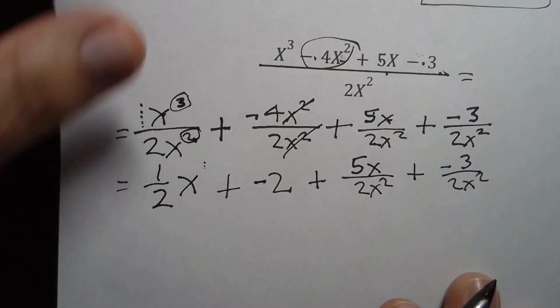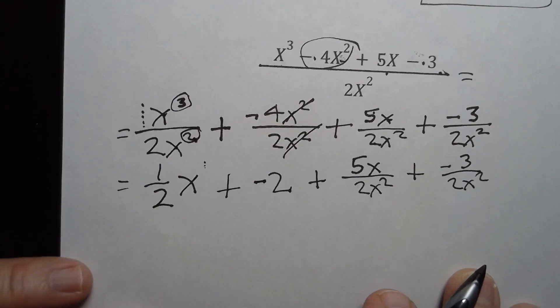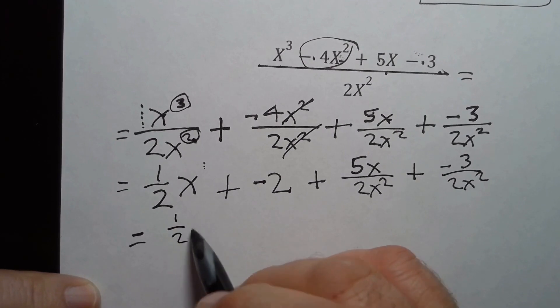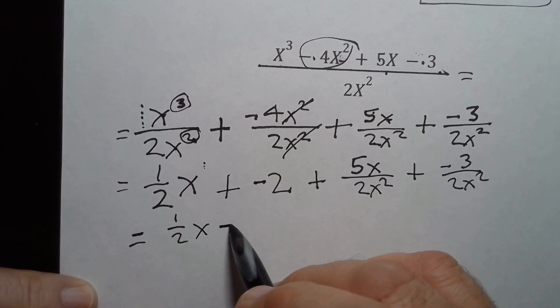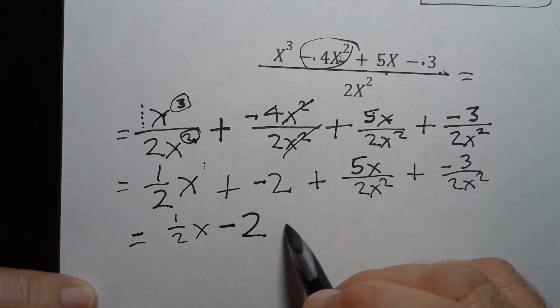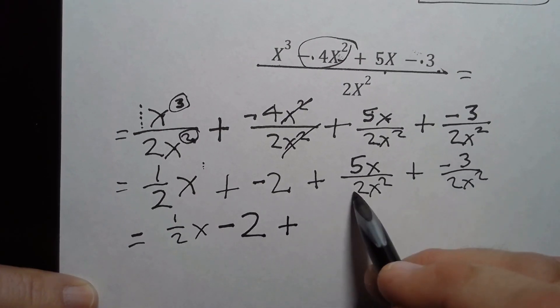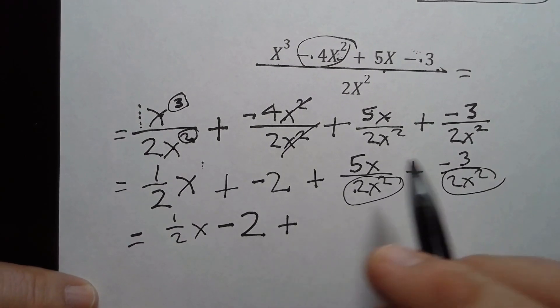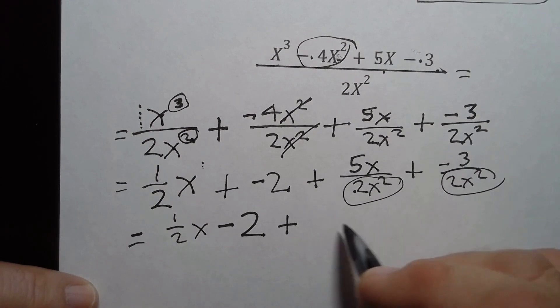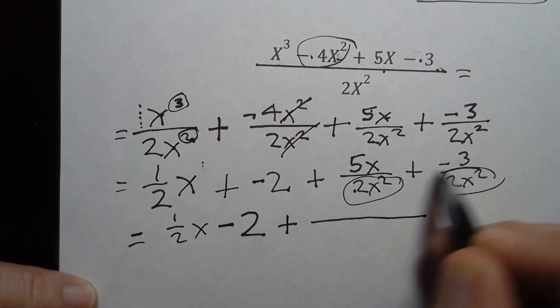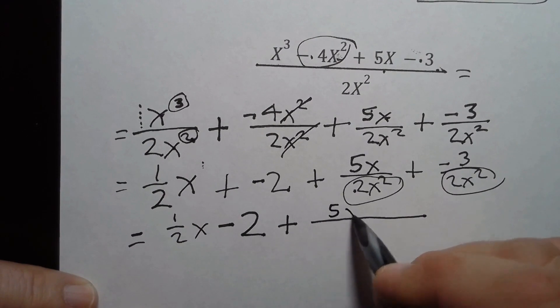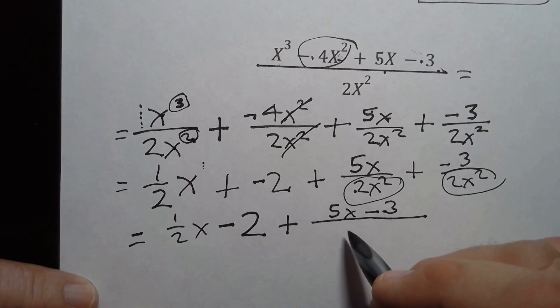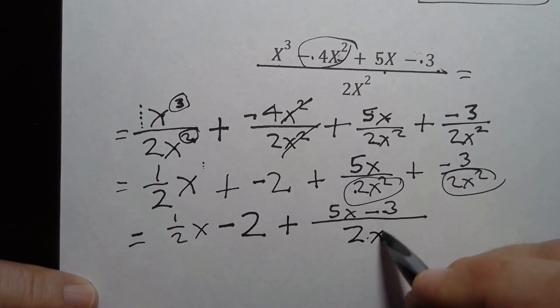Now let's do the next step and clean things up a little bit more. I've got 1/2 x and I'm adding a negative, so I'm just going to clean that up to say minus 2. And I'm going to add to it, and I've got the same divisor for both of these, and I couldn't reduce it anymore, so I'm just going to combine them on top here: 5x minus 3, combined under one line with the divisor 2x².